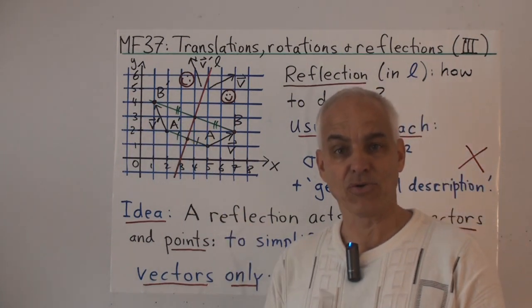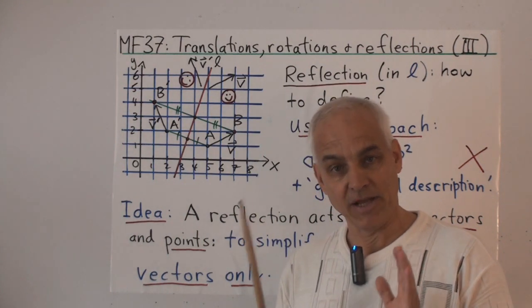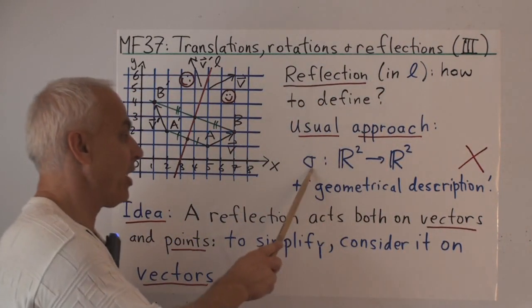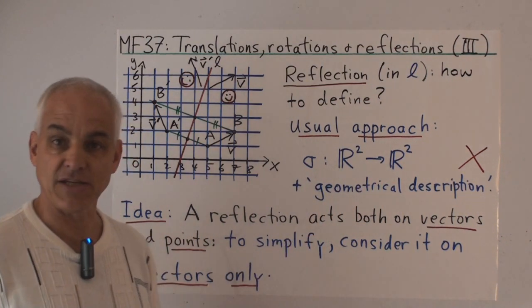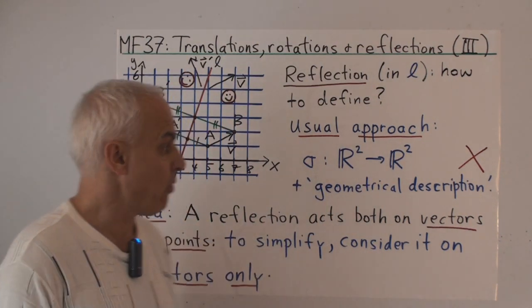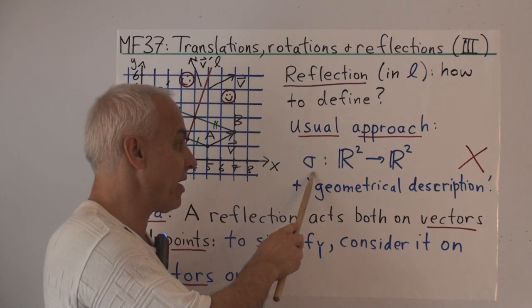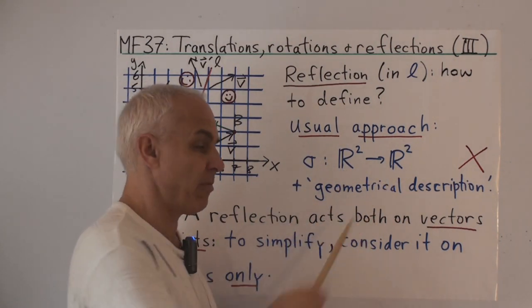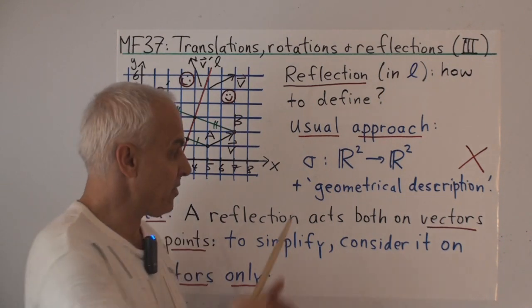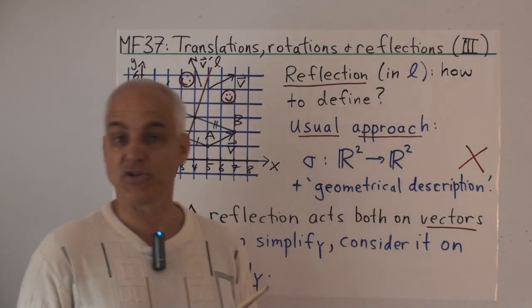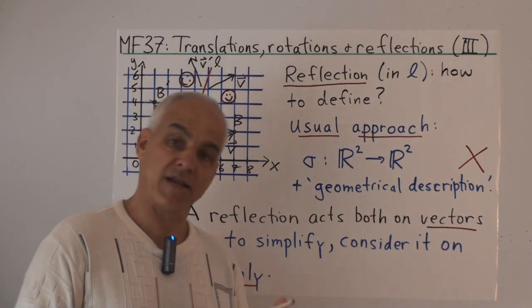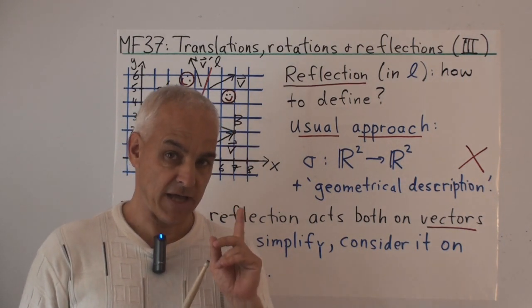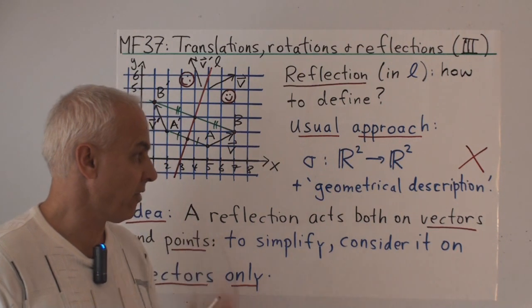That's a physical or geometrical description. Now we want something a little bit more formal. The usual idea is to work in the functional notation that's common in modern mathematics, where we say that the reflection sigma is a function or map from the real plane to the real plane. And then there's some additional geometrical description that specifies what kind of a function it is. We're not going to use that approach for a number of very good reasons.